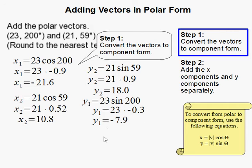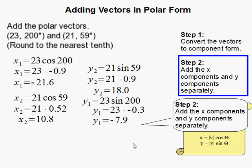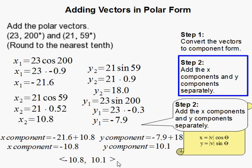Now that I have them all here, I can add them up. The x component would be negative 21.6 plus 10.8. The y component is negative 7.9 plus 18. I add these guys up and then rewrite my final vector in component form.